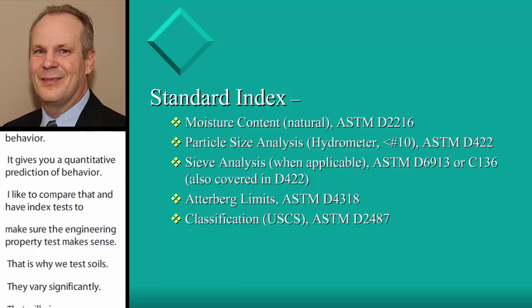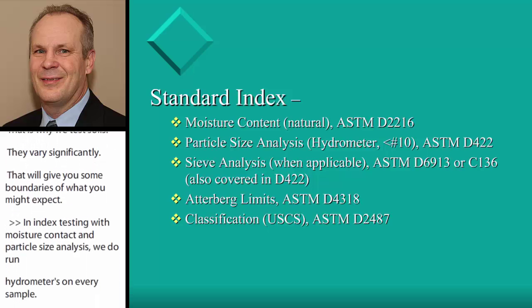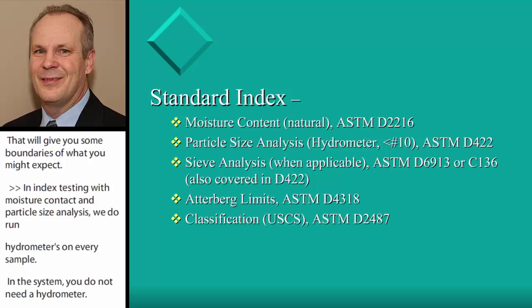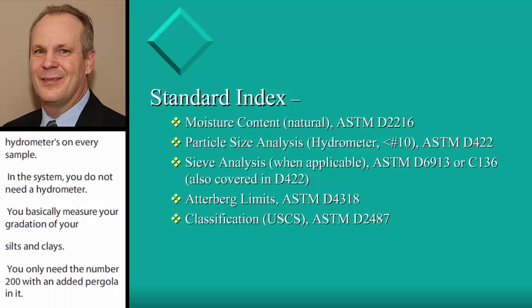Index tests include moisture content and particle size analysis. We run hydrometers on just about every sample. In the USCS system you do not technically need a hydrometer — basically, you measure your gradation of your silts and clays, and all you need is the No. 200 sieve with an Atterberg limit to classify it. But we do like the hydrometer reading to get the percent clay content. Atterberg limits and the USCS classification fall under ASTM D2487.